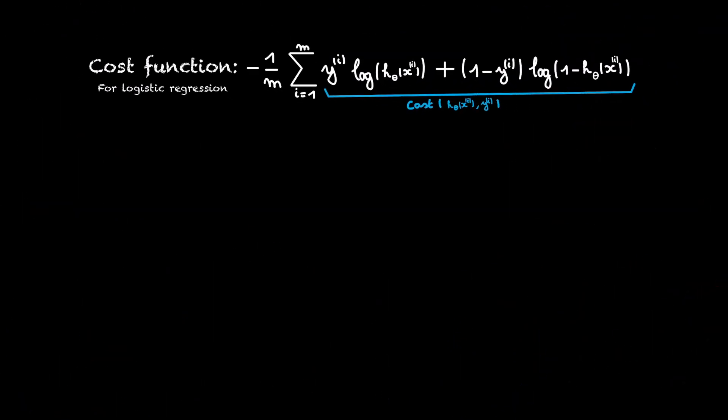Now, let's recap. We have seen that this function is the cost function we will use in logistic regression. We didn't prove it, but this function is convex for logistic regression. So we are sure we will end up in a global minimum if we run gradient descent.